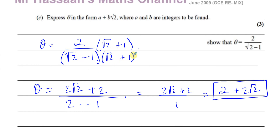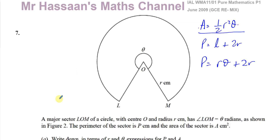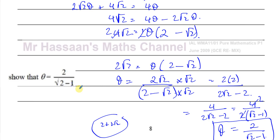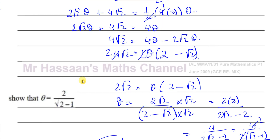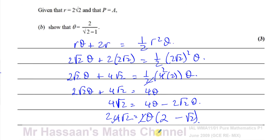There we have the answer to the whole question. Part a was straightforward — just writing down the sector formulae. Part c was simple rationalizing. Part b required the extra thinking: recognizing that the given form had a rationalized numerator rather than denominator, and working accordingly to show the result. Thanks for watching.